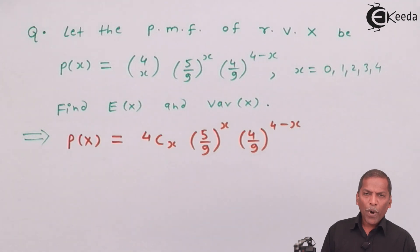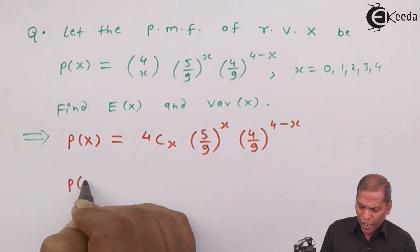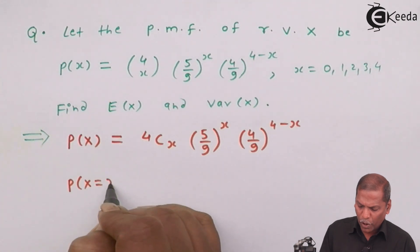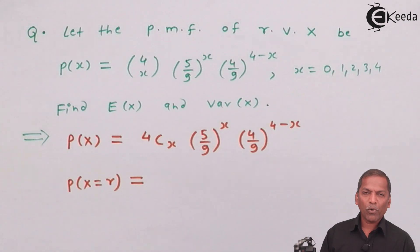Now, comparing this given data with our formula that probability X equal to R success is equal to NCR, P raise R into Q raise (N minus R), where R takes value 0, 1, 2, 3, up to N.